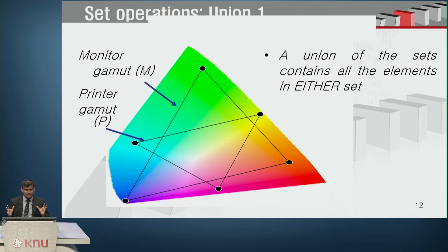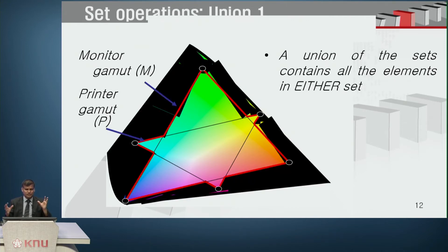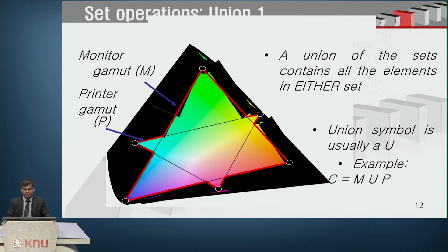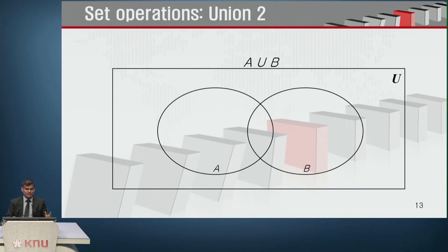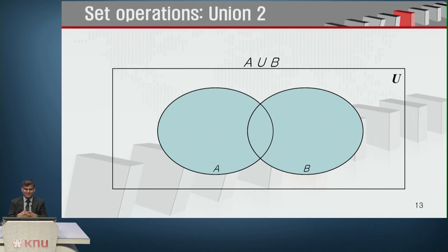Union of a set contains all elements in either set. So union of M and P combines all elements of M and all elements of P, represented by the symbol ∪. In simple terms, if set A contains {1, 2, 3} and set B contains {4, 5, 6}, then A ∪ B = {1, 2, 3, 4, 5, 6}. The Venn diagram for A ∪ B shows all elements of A and all elements of B put together. That is why we call it the union of all elements.